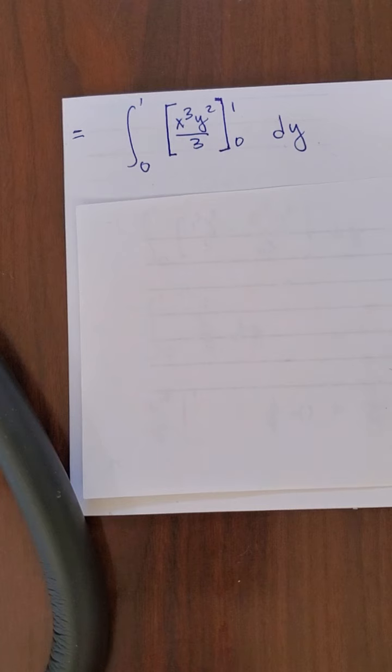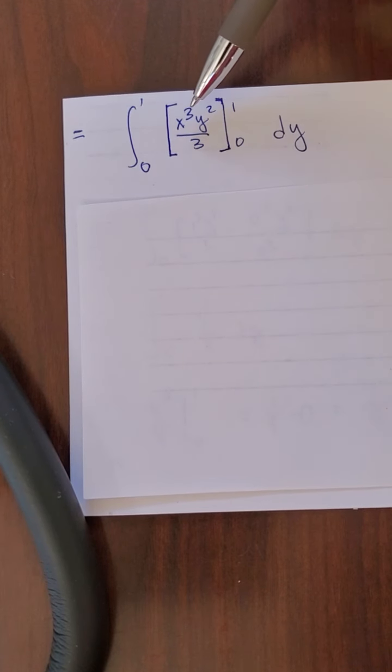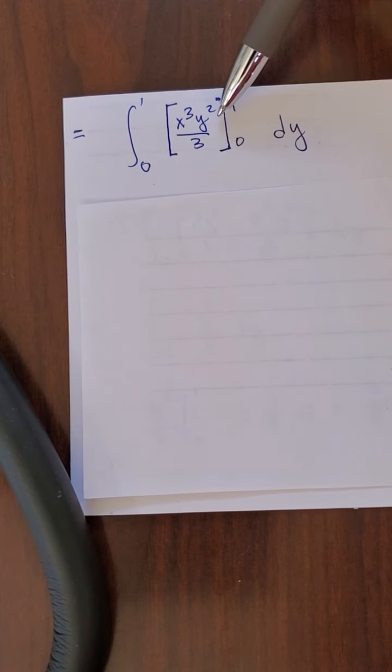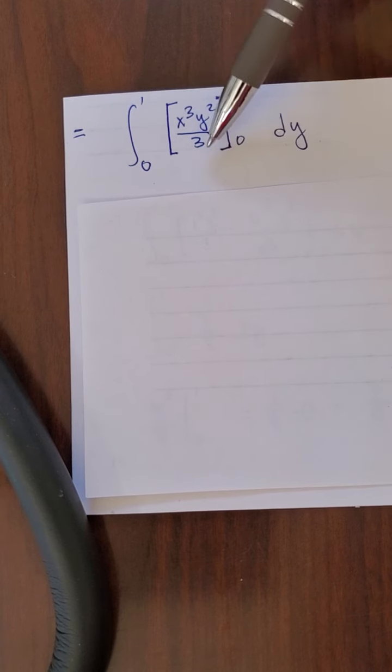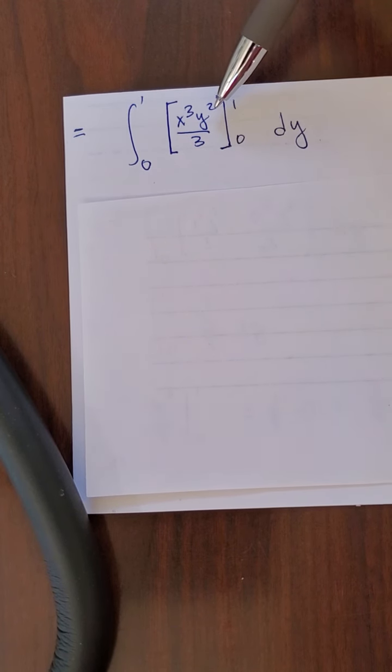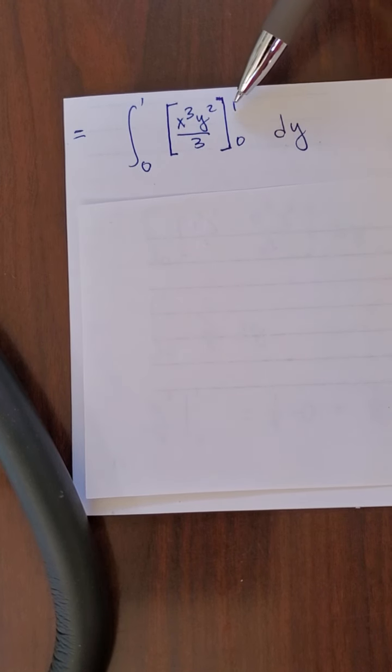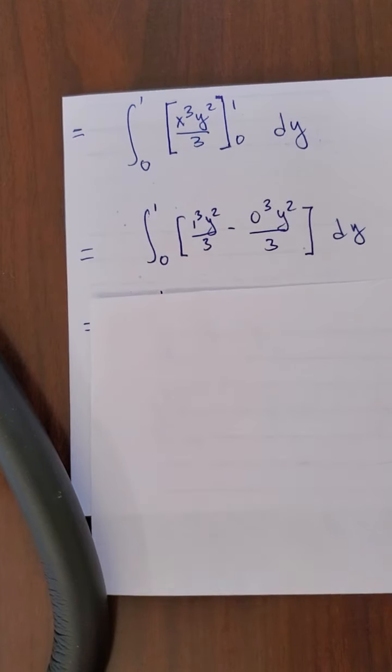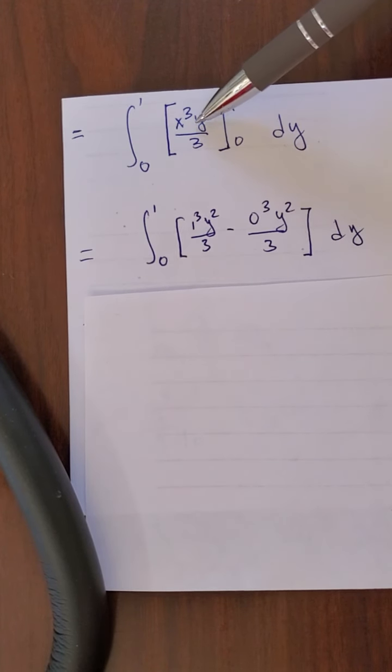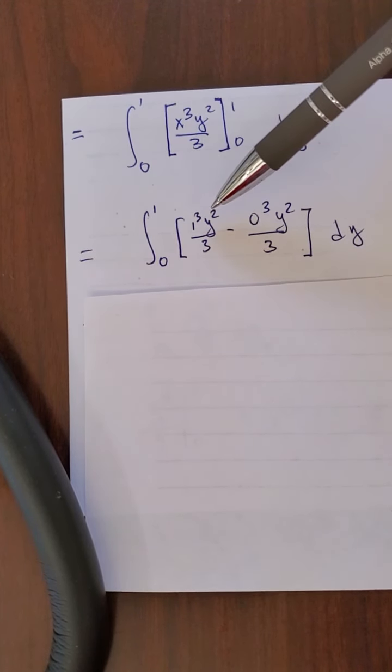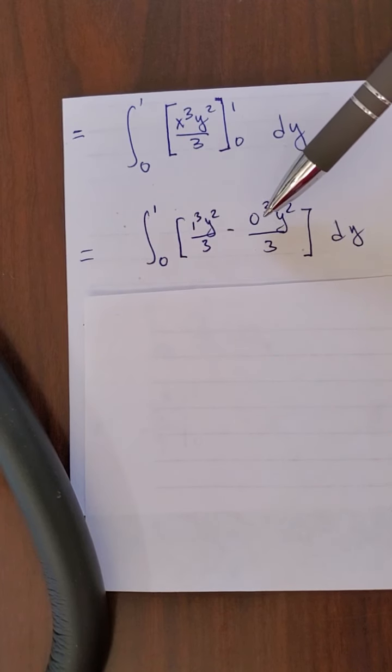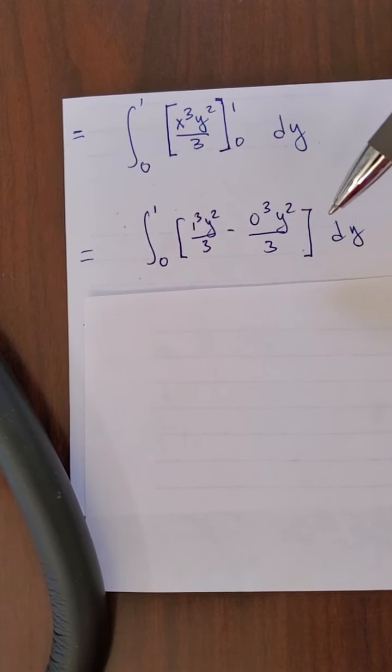So, we have this guy right here, because that was when I first integrated with respect to x. I got x cubed over 3 times y squared. Remember, the y squared was a constant, so it's very similar to before, but I have to evaluate it between 0 and 1, because that was inside that blob. Now, that's going to equal this. So, this guy here is equal to 1 cubed y squared over 3 minus 0 cubed y squared over 3 dy,